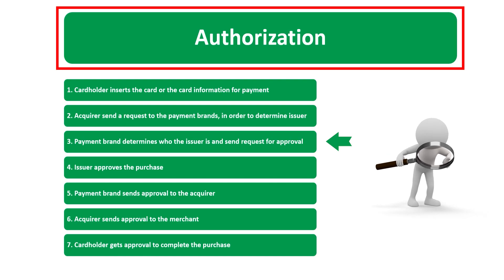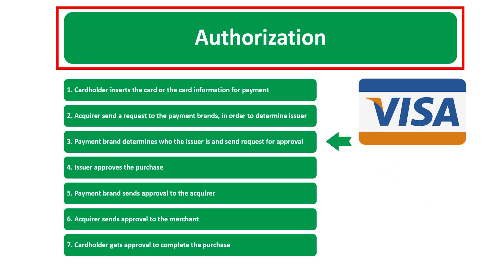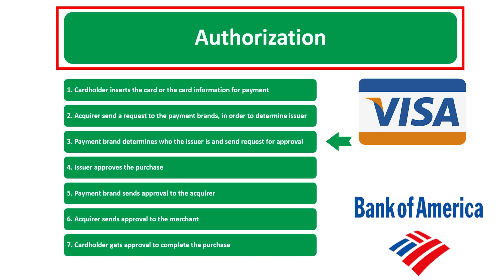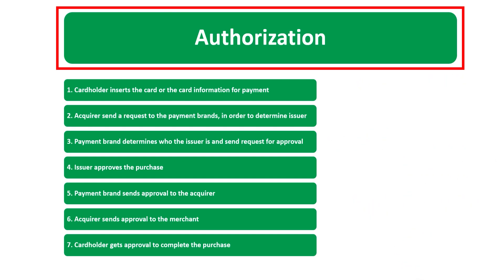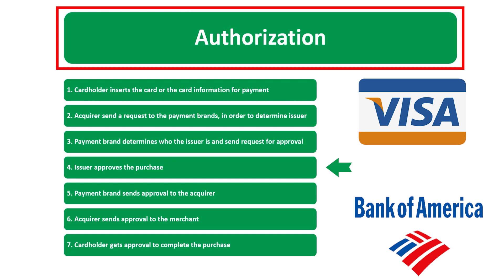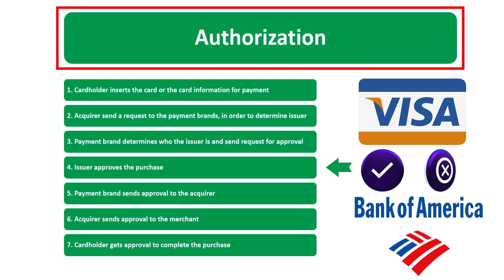Step number three: the payment brand determines who the issuer is and sends a request for approval. For example, Visa was able to identify that the issuer is Bank of America, so Visa is going to send a request for approval of that transaction.